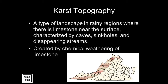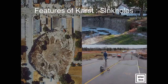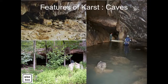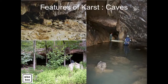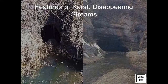Karst topography is a type of landscape in rainy regions where there is limestone near the surface, characterized by caves, sinkholes, and disappearing streams. It is created by chemical weathering of limestone. Here are examples of sinkholes, caves, and disappearing streams.